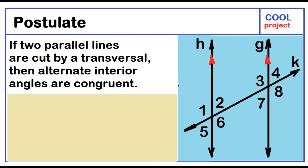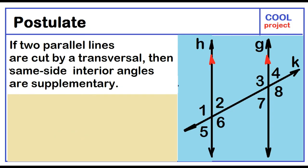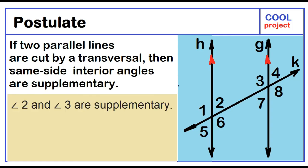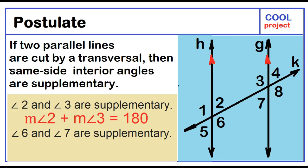If two parallel lines are cut by a transversal, then alternate interior angles are congruent: angle 2 is congruent to angle 7, and angle 6 is congruent to angle 3. If two parallel lines are cut by a transversal, then same side interior angles are supplementary. Angle 2 and angle 3 are supplementary: the measure of angle 2 plus the measure of angle 3 equals 180. Angle 6 and angle 7 are supplementary: the measure of angle 6 plus the measure of angle 7 equals 180.